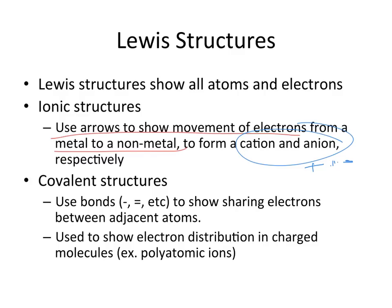Covalent structures use stick bonds to show the sharing of electrons. We have three types: single, double, and triple bonds. One stick bond means the atoms are sharing one pair of electrons. A double bond means they share two pairs, and a triple bond means they share three pairs of electrons. Every stick represents a pair of electrons being shared between atoms.